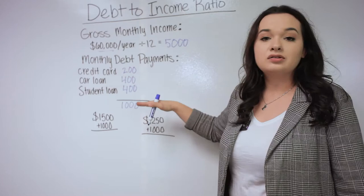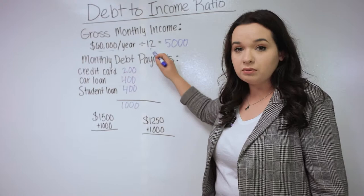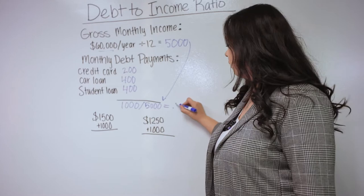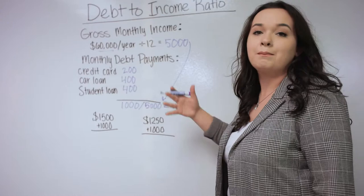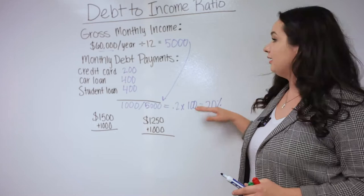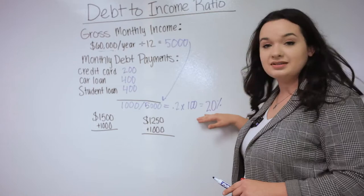Now that we know our monthly debt payments and our gross monthly income, we divide the $1,000 by the $5,000. That gives us 0.2. To get the ratio, we multiply 0.2 by 100, which gives us 20%. This 20% is my current debt-to-income ratio in this example, without factoring in a house payment.